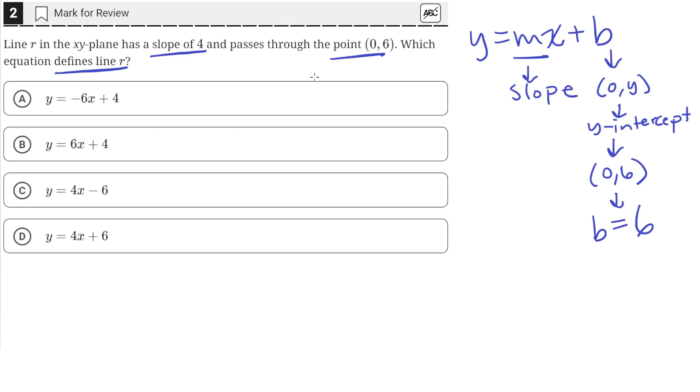We're also given the slope of the line. In the problem, it says the slope is 4.